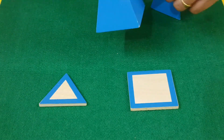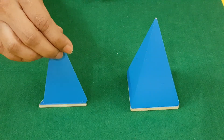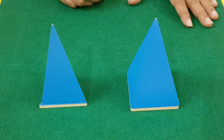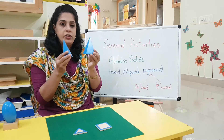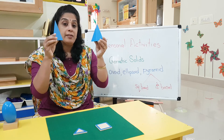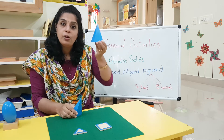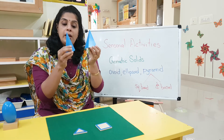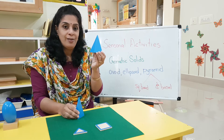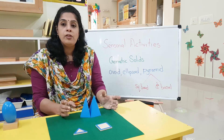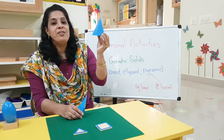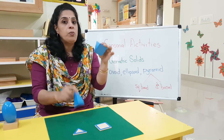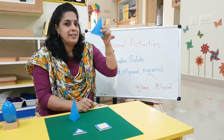So this is called a square based pyramid and this is called a triangle based pyramid. Now let's look at where we see pyramid shapes around us. You would have seen pyramid shapes on buildings — on top of buildings, on the roof of buildings, maybe on a temple. Gopuram! You will see it on the temple or on top of churches, on top of a castle. And also the cell phone tower — the tall, very tall one. I think it is a square based pyramid.